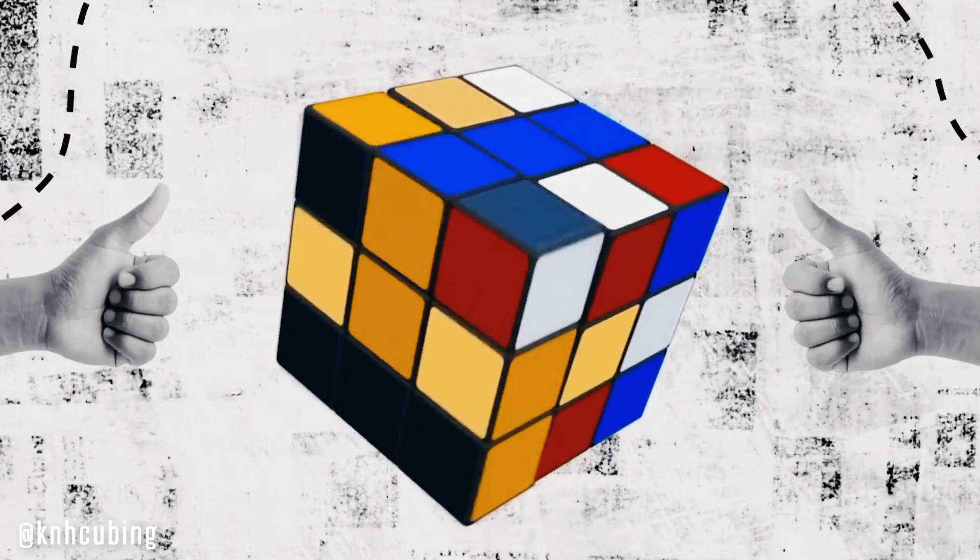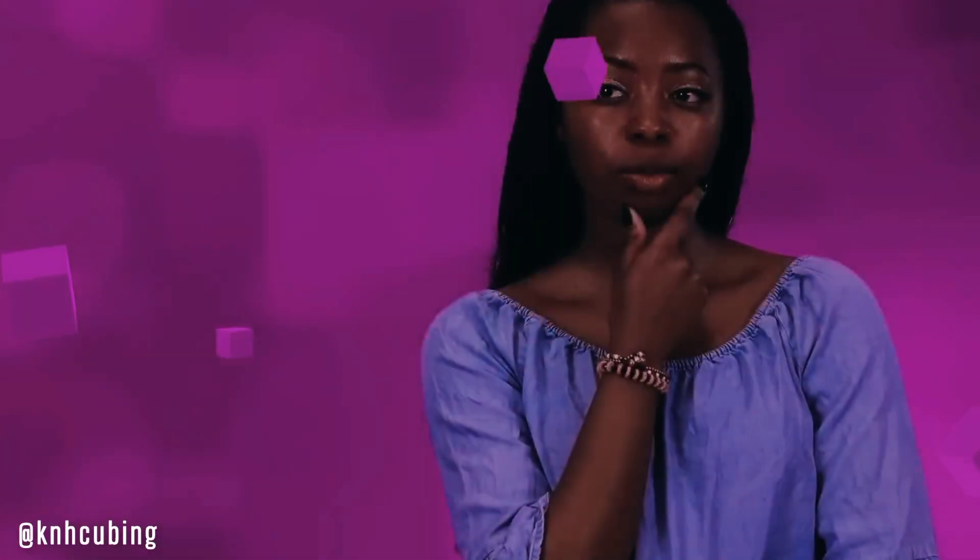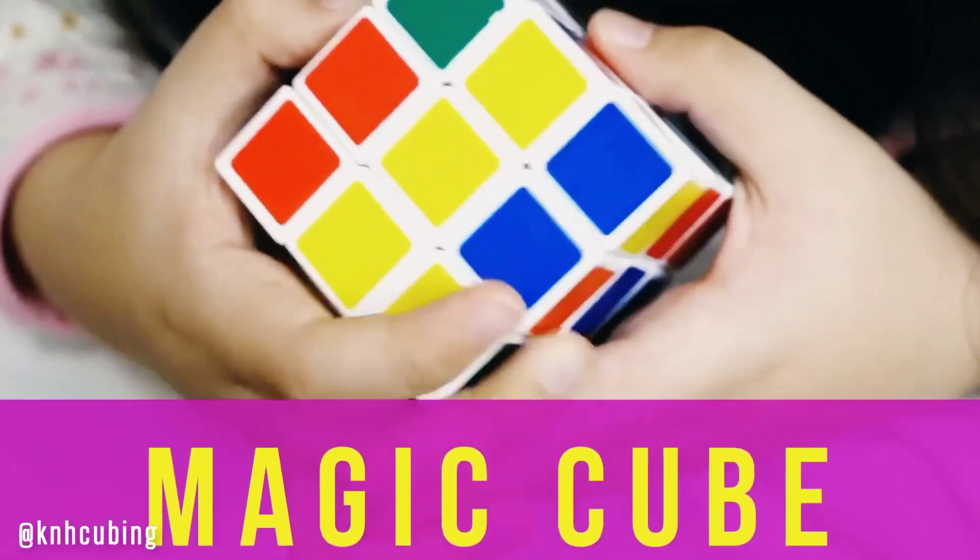The first Rubik's Cubes were produced in late 1977. Do you know how the Rubik's Cube was originally called? Magic Cube. But later, the name was changed to patent it in other countries.